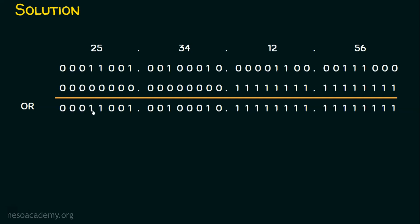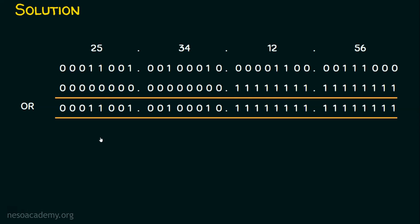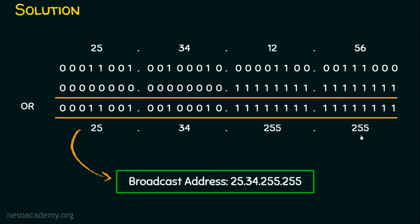Performing the bitwise OR: in the first octet, where one input is 1 and the other is 0, we get 1. In the third octet, the first four places are 0 in the IP address, but we have four ones in the subnet mask complement part. The next bits follow the same rule — at least one input is 1, so we get 1. When we convert the resulting binary octets into decimal, we get 25.34.255.255.